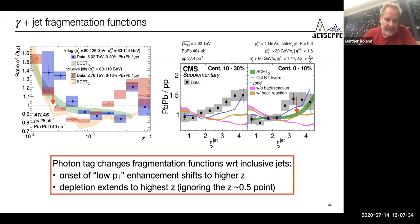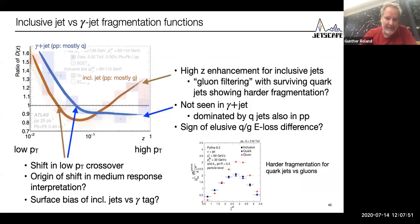You see there is an enhancement in this ratio of lead lead to PP. There's an enhancement at low PT and at high PT for inclusive jets, not for the photon jets. Here's my cartoon version of it. I have an enhancement at low z, meaning low PT particles, seen in inclusive and photon jet events. But at high PT there's a difference.